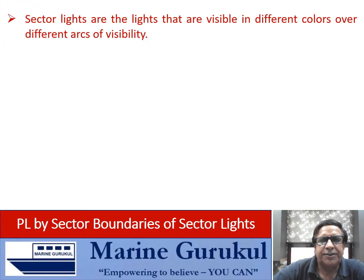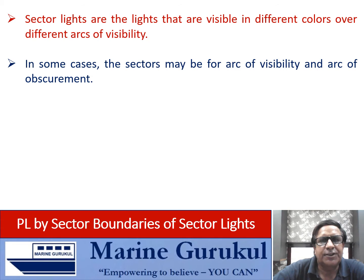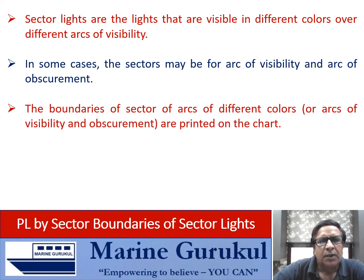Sector lights are lights that are visible in different colors over different arcs of visibility. In some cases, sectors may be for arcs of visibility and arcs of obscurement of the light. The boundaries of sectors of arcs of different colors, or arcs of visibility and obscurement, are printed on the chart.